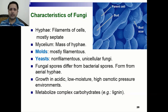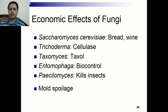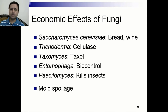Fungi like to metabolize complex carbohydrates, for example lignin. Here are some economic effects of fungi: Saccharomyces cerevisiae helps in bread production and white wine production. Trichoderma helps in cellulase enzyme production. Taxomyces helps in the production of taxol. Some fungi help as biocontrol agents, and Paecilomyces kills insects. Some fungi also cause spoilage — for example, they spoil fruits like oranges, and Rhizopus is an example that spoils bread.